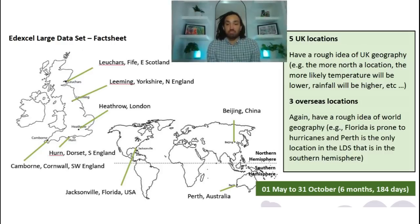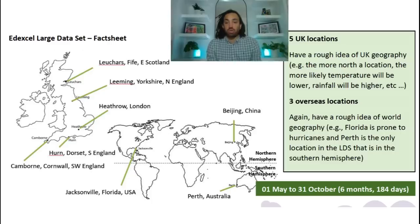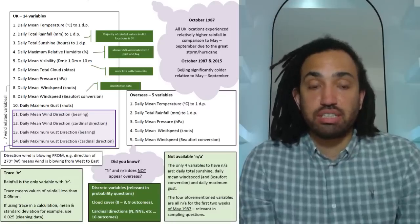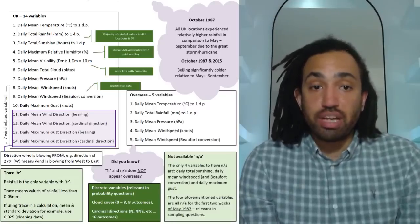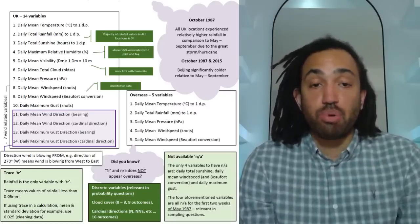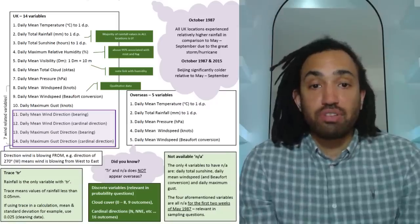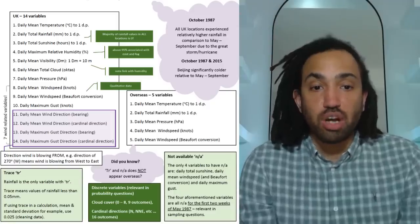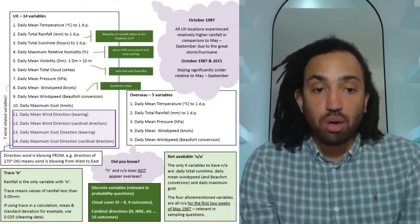Moving on to variables, there are 14 variables in the UK and there are five variables overseas and you will need to know the units in which each variable is measured in. There are some other nuances as well for example rainfall is the only one which has TR which stands for trace.